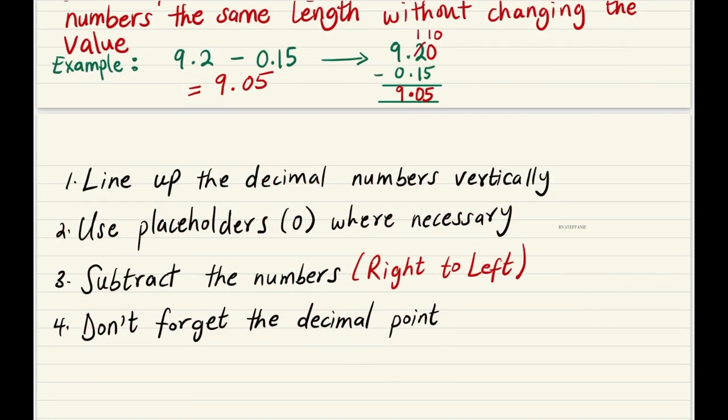Every time you get a question, remember to: line up the decimal numbers vertically, use placeholders, in this case zero, where necessary, subtract the numbers from right to left. As we can see from this example, as we were subtracting, we went in this direction from the right side to the left side. And always, never ever forget to bring the decimal points down. When you write your final answer, be sure that your decimal point is present and in the right place, otherwise your answer is wrong.